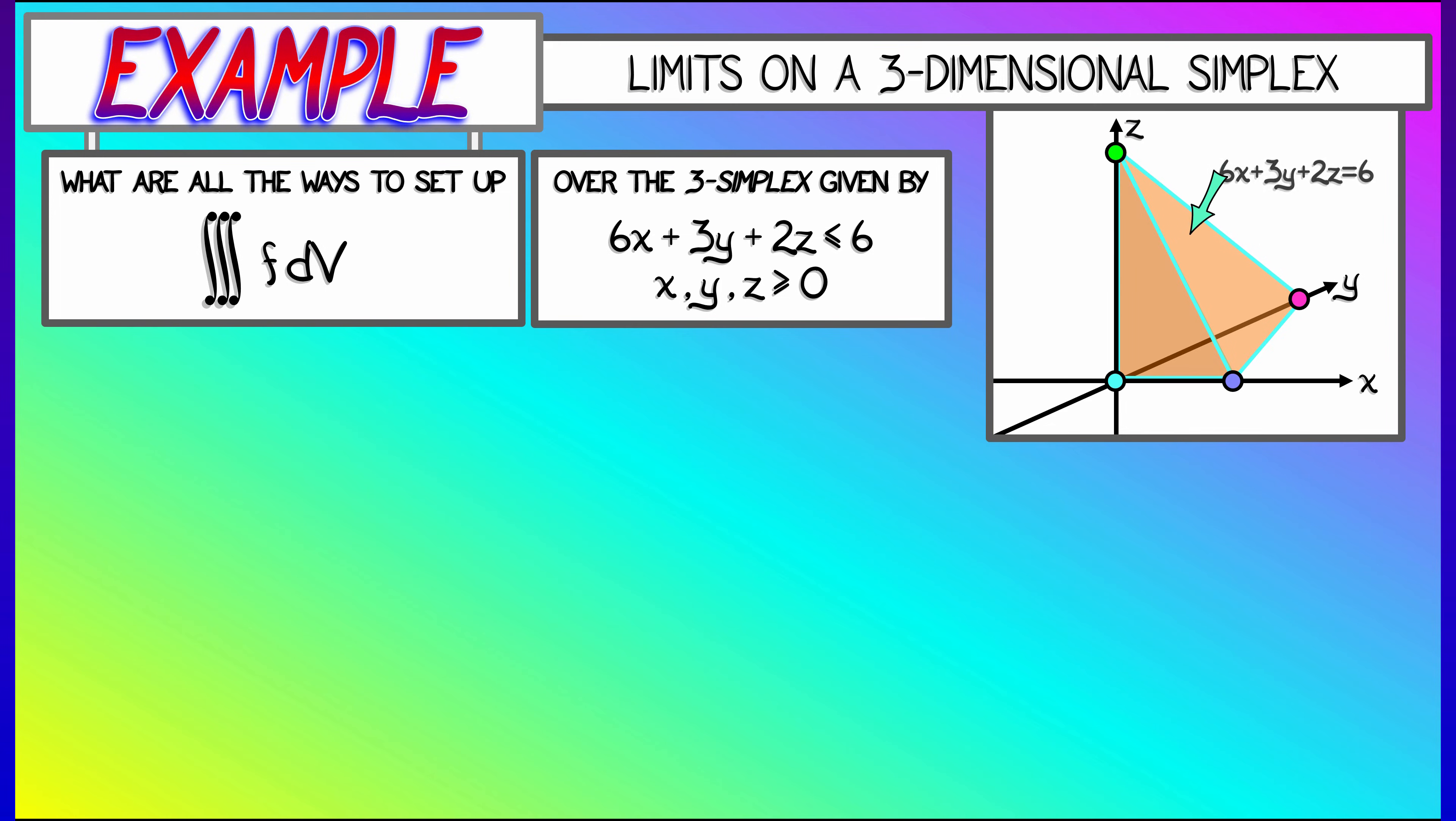Well, if I consider the equation of that plane, 6x plus 3y plus 2z equals 6, then that intersection intersects the x, y, and z axes at certain points. We can solve for those locations by, for example...